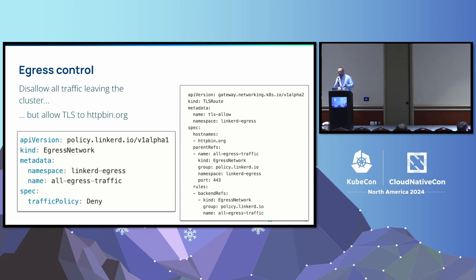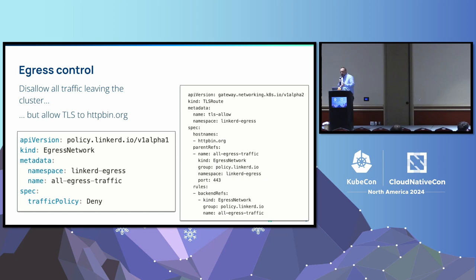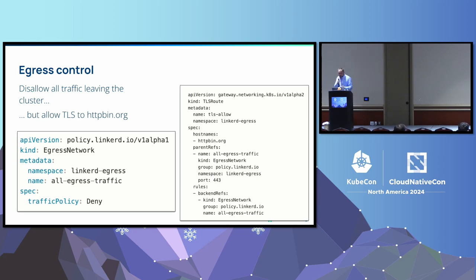If you want to disallow all traffic leaving the cluster, just clamp it down — that's the thing on the left. But now we want to allow traffic not to a CIDR or set of IP addresses, but to a hostname. That block of YAML on the right lets you specify hostnames. For those astute in the ways of Gateway API, you'll notice that these TLS routes are actually Gateway API objects. The egress network CRD on the left is Linkerd-specific; the thing on the right is Gateway API.